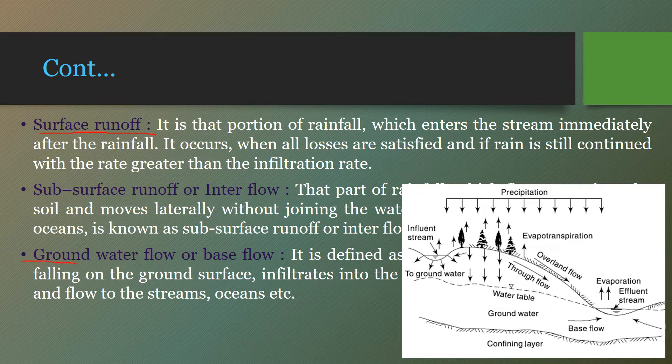Groundwater flow or base flow: the water that percolates to the groundwater table and later, after a long period, joins the river stream is known as groundwater flow or base flow. After water infiltrates and reaches the water table, it eventually meets the water body after a long time interval — we call it groundwater flow or base flow.